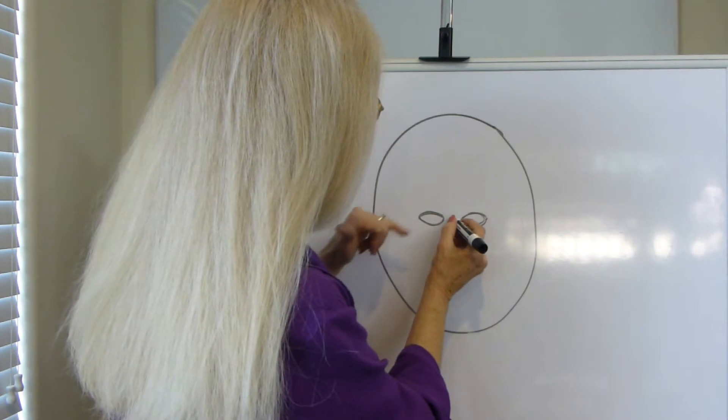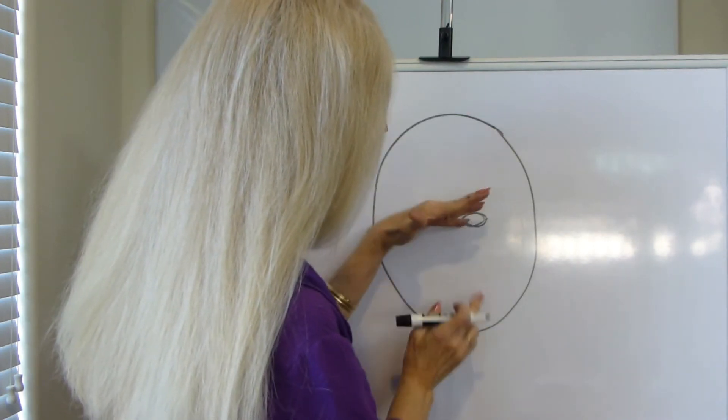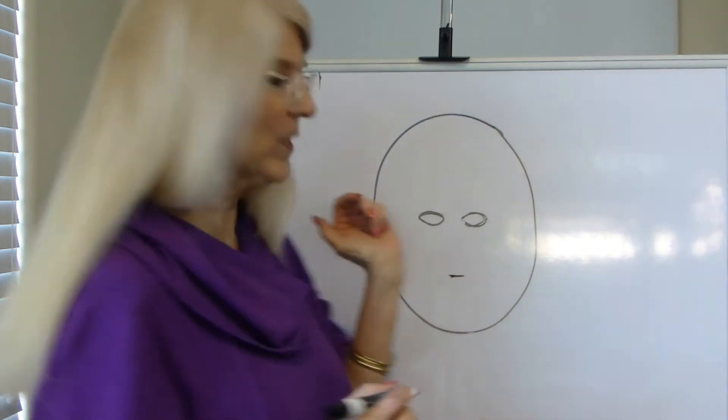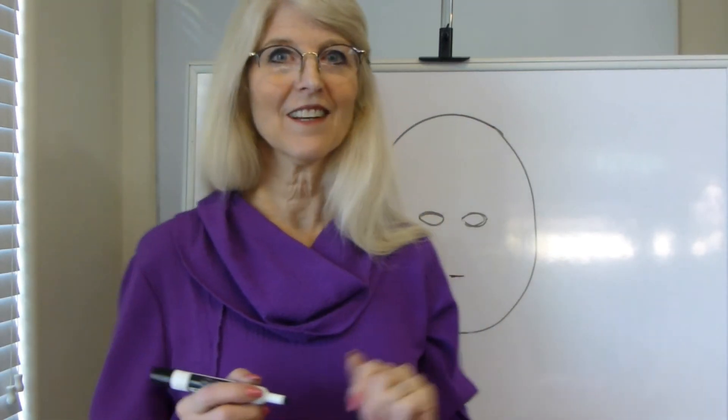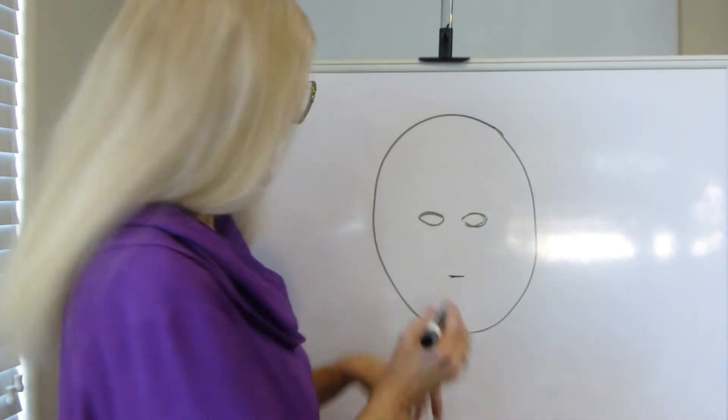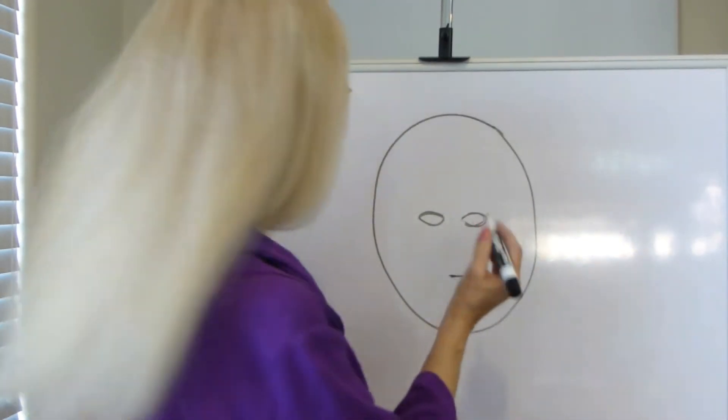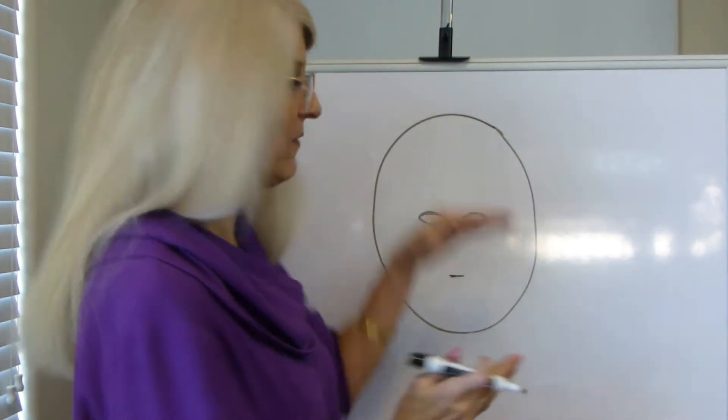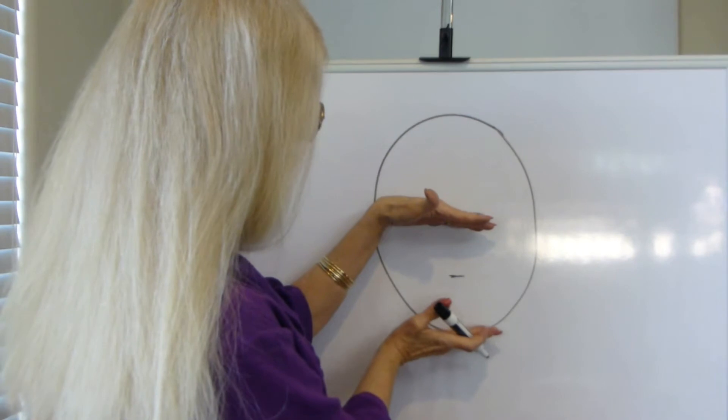Now from this line, which is in the middle of our face to the chin, let's draw another halfway line. Now what do you think that is? Kind of looks like the mouth, doesn't it? But it's not the mouth. This is the bottom of the nose. So draw a little line with the bottom of the nose. So you have a halfway mark of the chin.